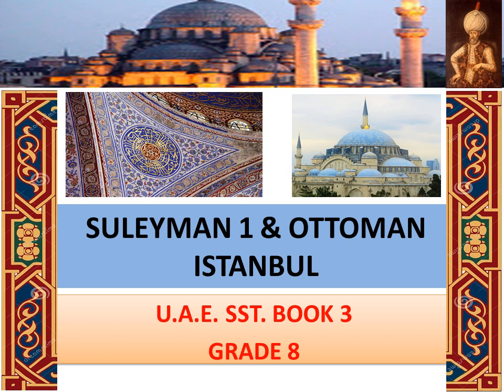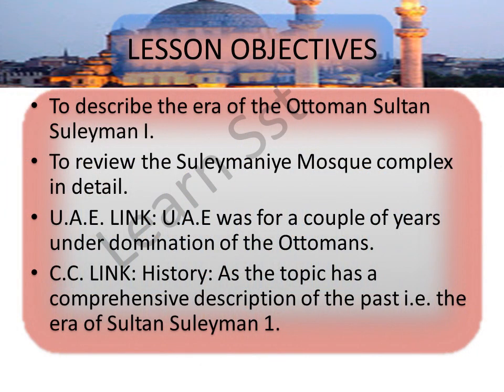Hello viewers. It gives me great pleasure to be back with my new video of UASST for grade 8 — Suleiman I and Ottoman Istanbul. The lesson objectives are: to describe the era of Ottoman Sultan Suleiman I, to review the Sulaymaniyah Mosque complex in detail, the UAE link (the UAE was for a couple of years under the domination of the Ottomans), and the SISI link, connected with history as the topic gives a comprehensive description of the era of Sultan Suleiman I.